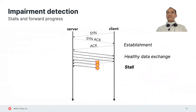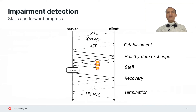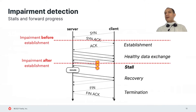The fundamental concept underlying impairment detection in CPR is the stall. For CPR, a stall happens when a TCP connection is unable to make further forward progress because the underlying path has failed. When a stall is detected, CPR will trigger a reroute, moving the connection to a new path that will hopefully allow it to make forward progress again. Note, however, that the precise definition of forward progress will depend on the lifecycle stage of the connection.